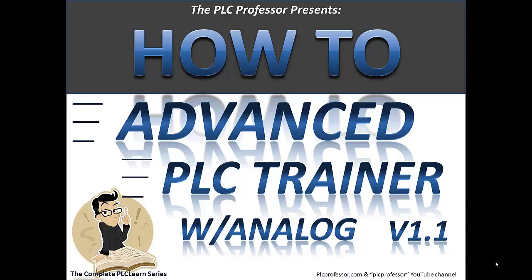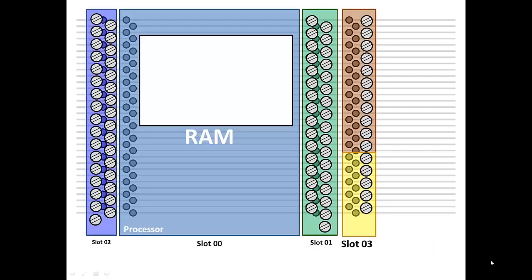Welcome back to how to build an advanced PLC trainer with analog part 2 or version 1.1, which means there's a 1.0 and you need to watch that first. Before you watch that, you should watch a couple other videos first on the electrical characteristics of backplanes in the physics playlist. If this is where you want to be, we're continuing on from where we left off.